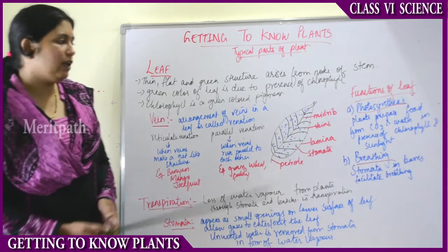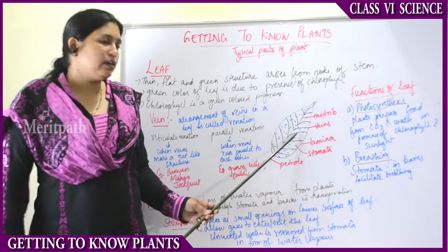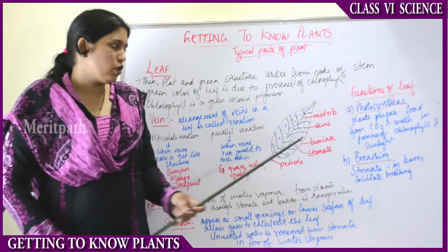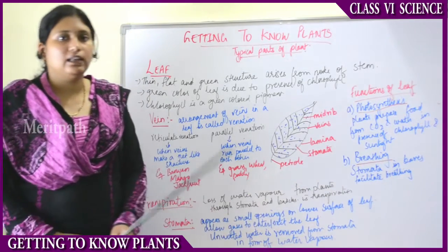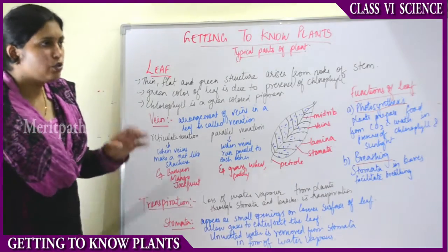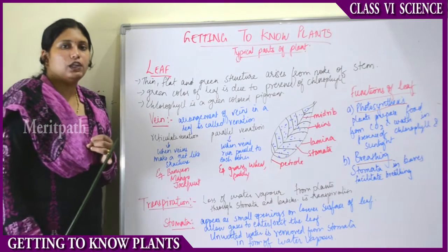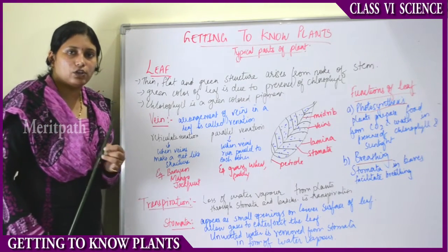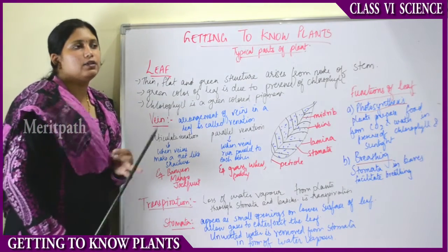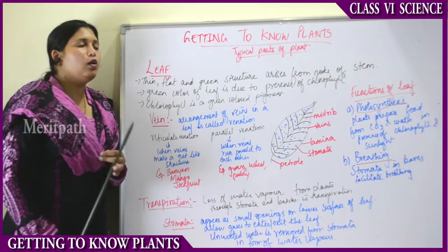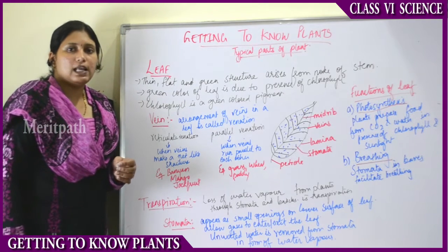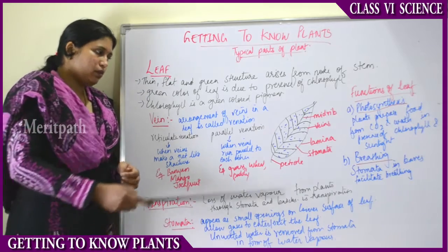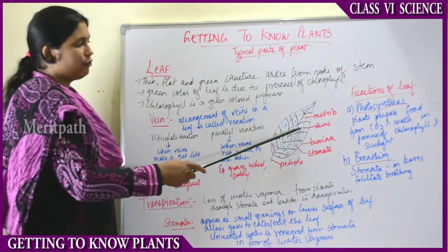Another major function of the leaf is breathing. Stomata, which are present as pores or small holes on the leaf, help in facilitating breathing. So there are only two major functions of the leaf: photosynthesis, which is preparation of food, and breathing through the small holes or pore-like structures on the leaf called stomata.